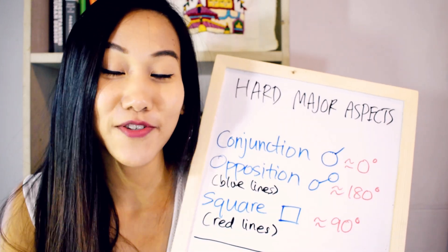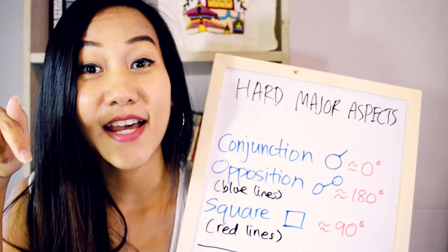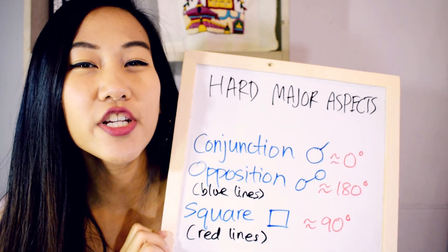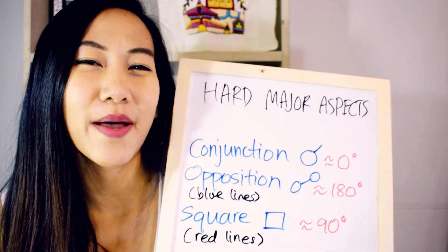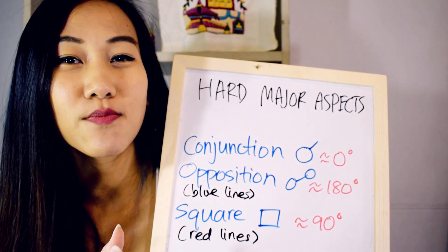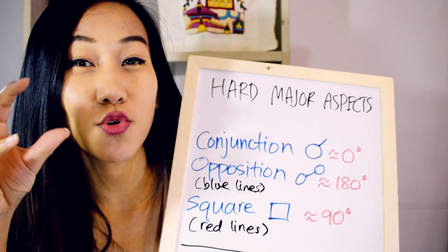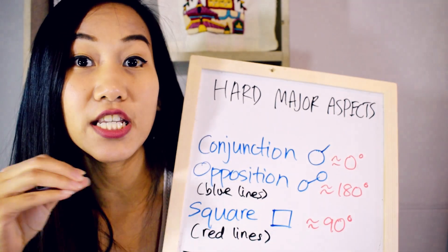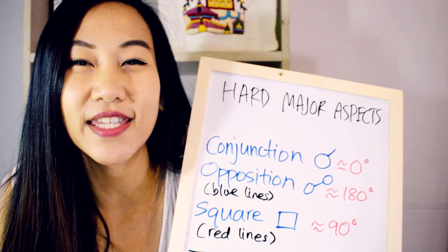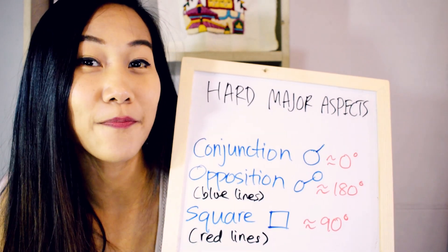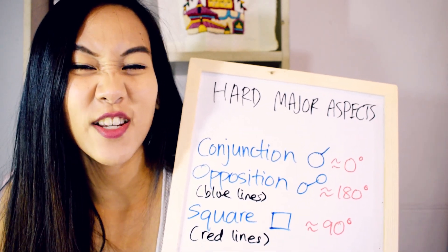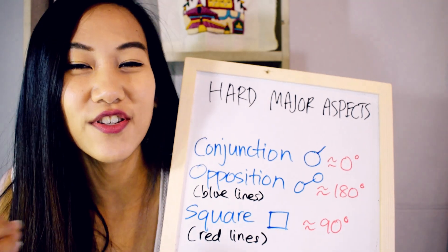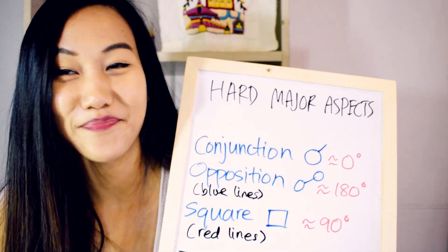So the conjunction is not really soft or hard, but I'm just putting it as a hard aspect here. It's more like when two planets are so close to each other they form a new kind of energy altogether because they just blend in together so well. So it's not necessarily hard or soft, it's just new.